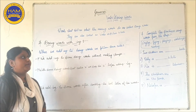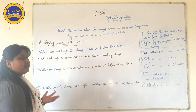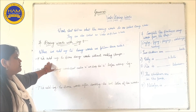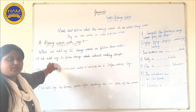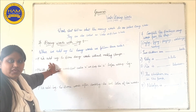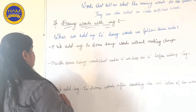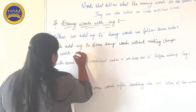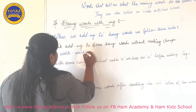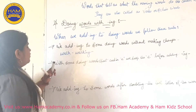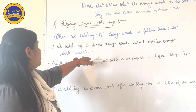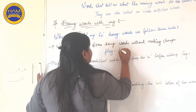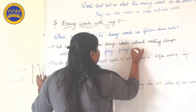Let's move on to another topic — doing words with -ing. There are some words to which we add -ing following some rules. Rule one: we add -ing to some doing words without making changes. For example, 'walk' becomes 'walking' (w-a-l-k-i-n-g), and 'play' becomes 'playing' (p-l-a-y-i-n-g).